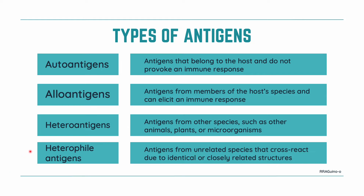Next, we have heterophile antigens. These are antigens from unrelated species that cross-react due to identical or closely related structures. An example is rheumatic fever, in which there is cross-reactivity between streptococcus antigens and heart tissue antigens. In this condition, the immune system confuses heart tissue for the bacteria because of their similarity in structure, and it thereby attacks the heart, which can lead to permanent damage or even death.